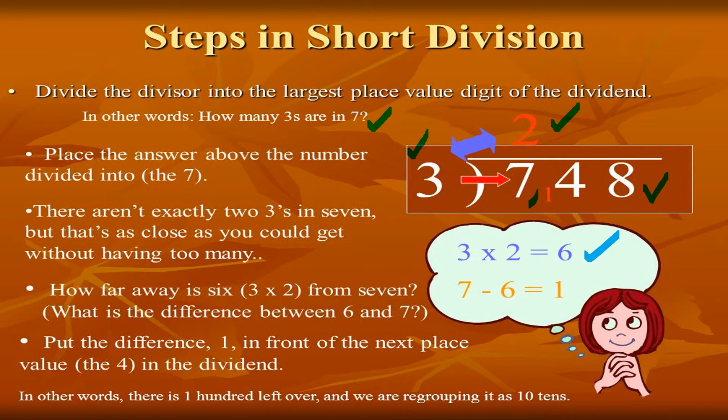You get 1 as the remainder, then bring down the next digit to get 14. How many 3s are in 14? There are 4. Find the quotient value, write it, and based on the remainder bring down the next digit to continue.